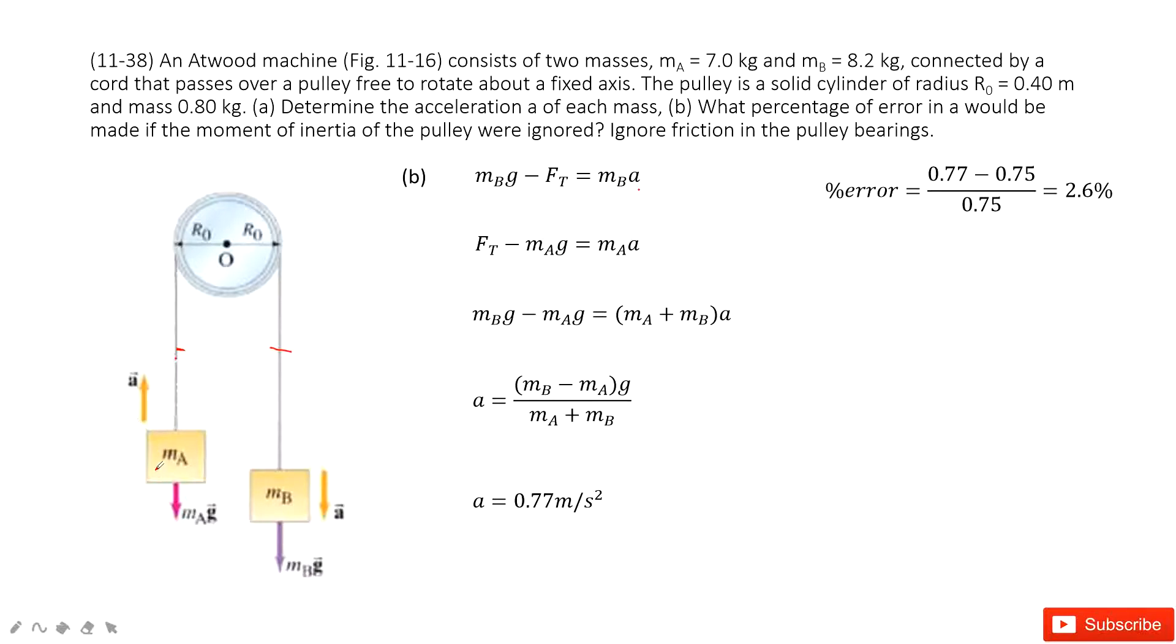And this side, the tension minus the gravity A equal to mass times acceleration. So with these two equations, we get the acceleration there, solve it there.